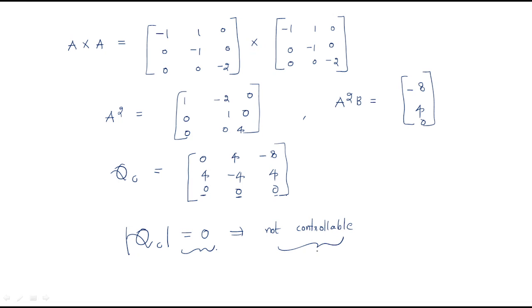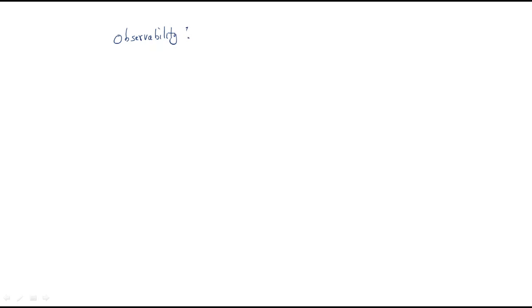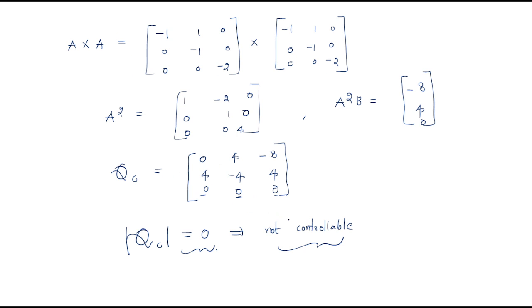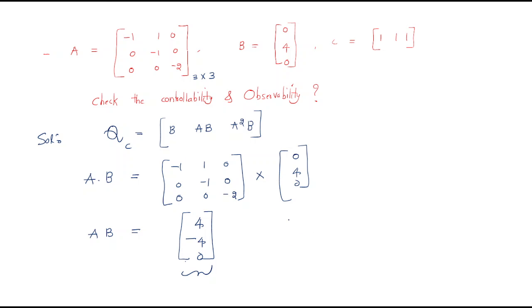For observability, as homework you should follow the procedure: form Q_0 from C^T, A^T·C^T, and (A^T)²·C^T. If you do the calculation you will find that Q_0 is not equal to 0, so the system is observable.